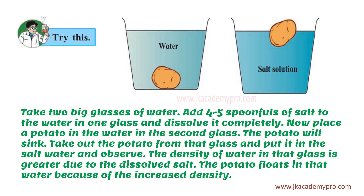Try this activity. Take two glasses of water, add 4 to 5 spoonfuls of salt to the water in one glass and dissolve it completely. Place a potato in the second glass — the one without salt — and you will notice that the potato sinks. Now take out the potato and put it in the salt water. You will see that the potato floats. The density of salt water is greater due to the dissolved salt, so the potato floats because of the increased density.